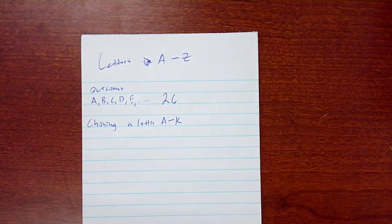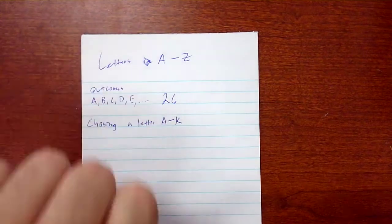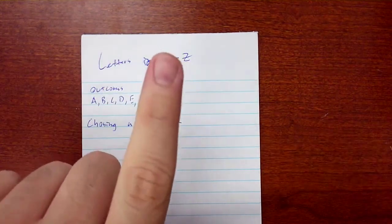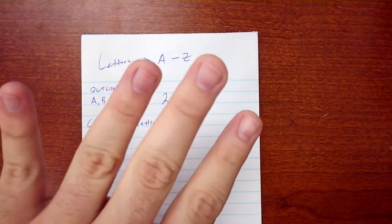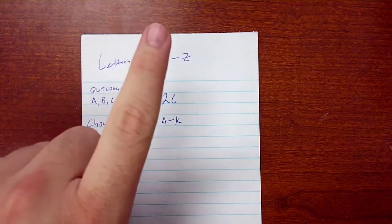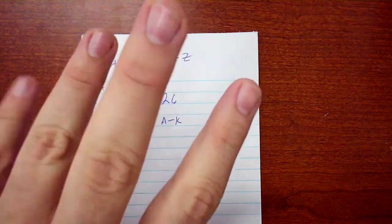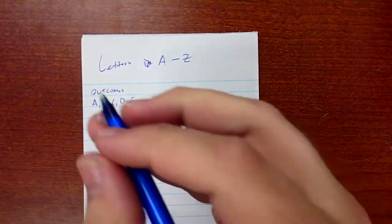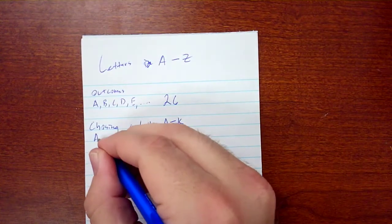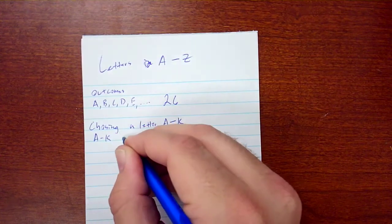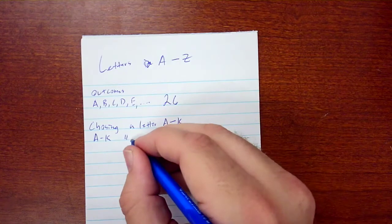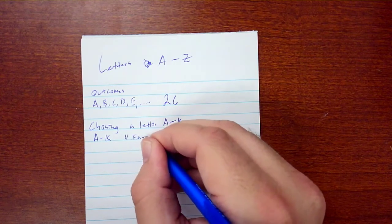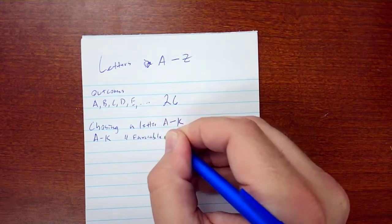Let's count. We have A, B, C, D, E, F, G, H, I, J, K. So letters A through K, a total of 11 favorable outcomes.